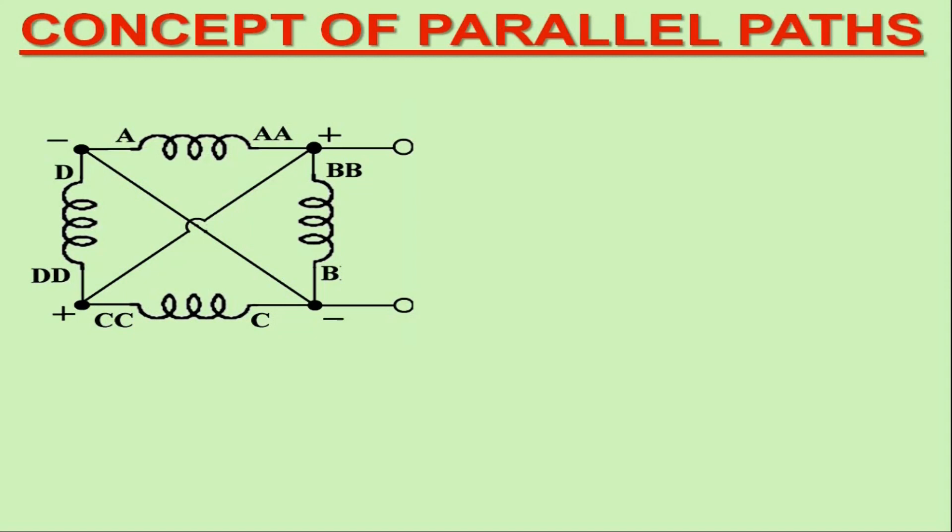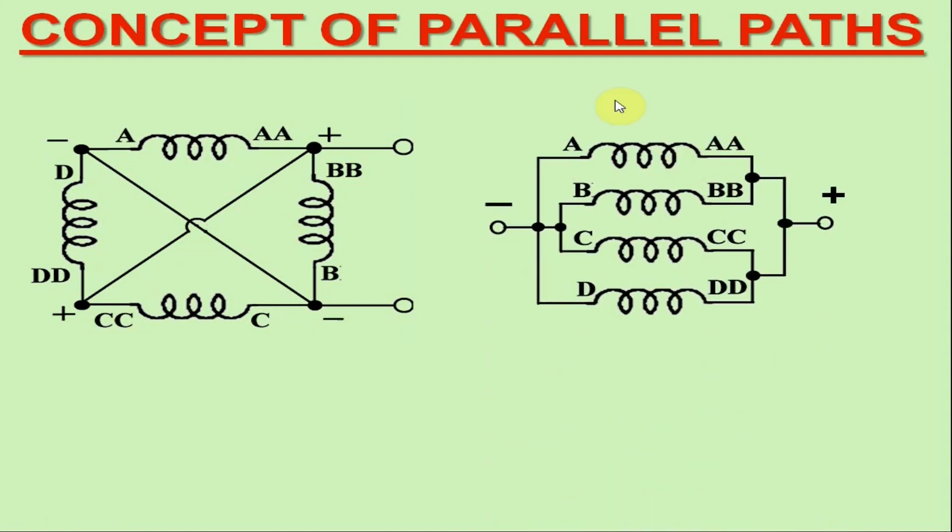Now see what happens when the armature coils are arranged in such a manner as illustrated now on your screen. In order to easily understand this sort of armature coil arrangement in the DC machine, the armature circuitry has been rearranged on the right side wherein you may verify that the coil ends AABB and CCDD are connected to the positive brush terminals.